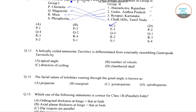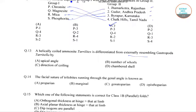In the next question, a vertically coiled ammonite Turrilites is differentiated from the externally resembling gastropod Turritella. We have four options: apical angle, direction of coiling, number of valves, and chambered cells. Ammonites are an extinct group of marine animals, and the only thing differentiating them from the externally resembling gastropod Turritella is their chambered cells. So the correct answer is option number D.